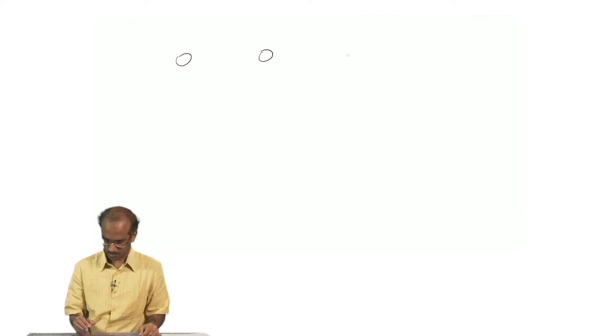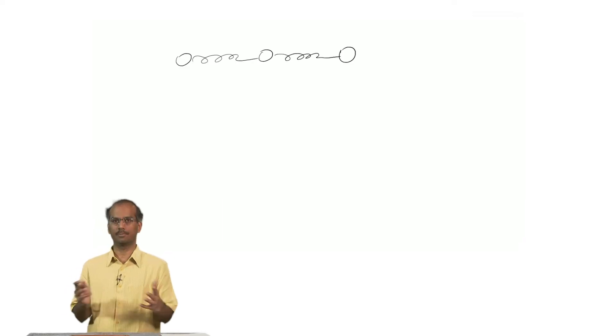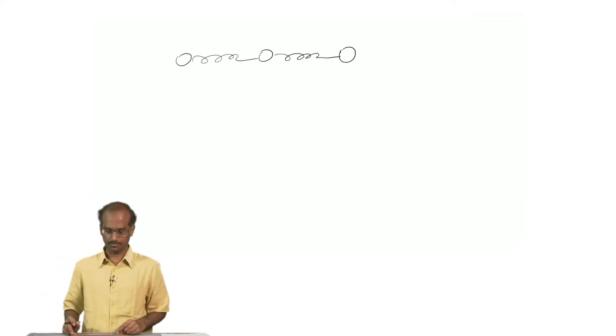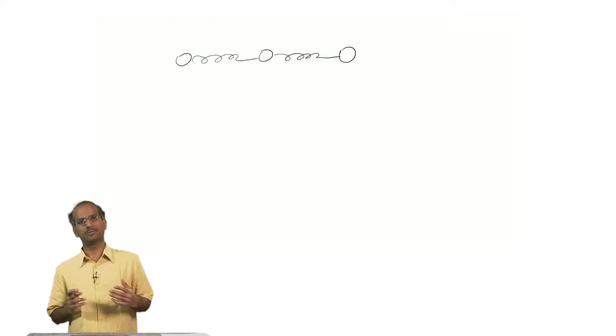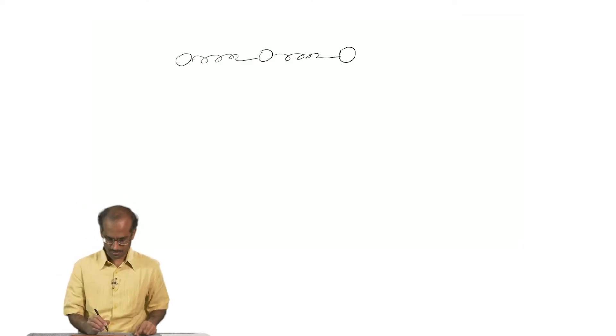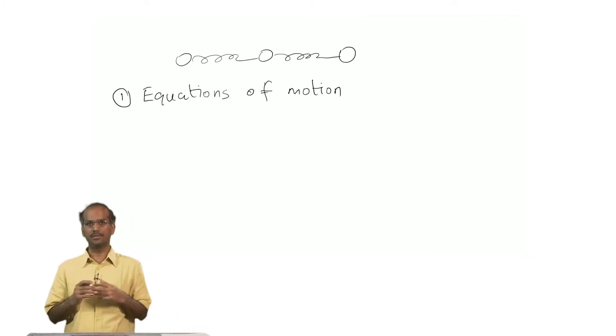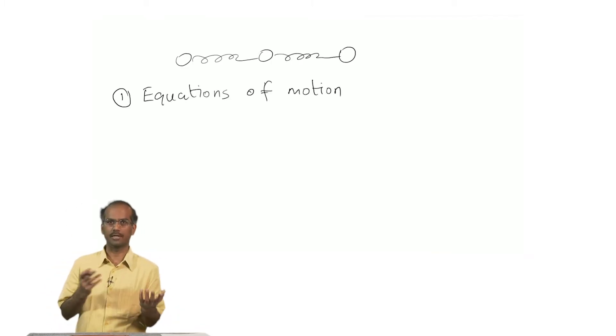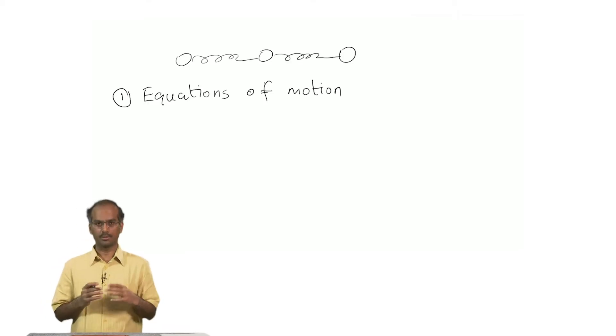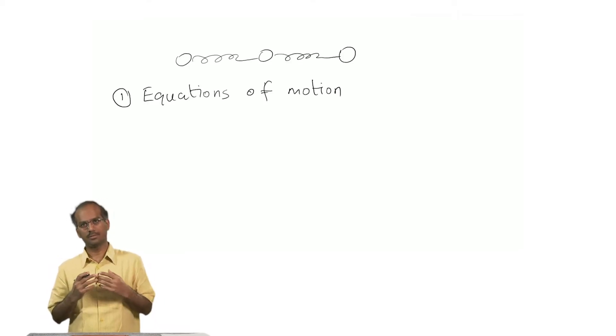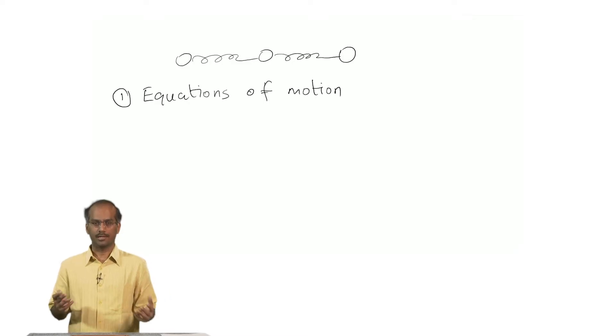Just to make a very brief and quick recap of what we had done: we started with the coupled system of equations. It could be, for instance, two or three oscillators or particles which are coupled by a spring. The way to do it is you write down the equations of motion first and then see if by a simple trick of adding or subtracting you can uncouple the equations.